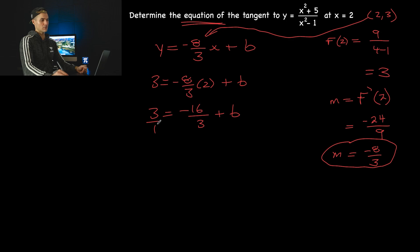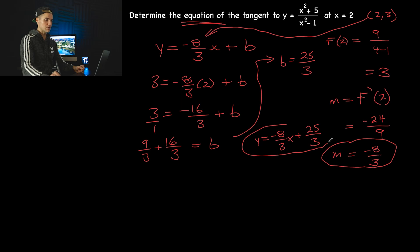Now if we've got a common denominator here, that'd be like 9 over 3. Bring the negative 16 over 3 over. That becomes positive is equal to b. So we get a b value of 25 over 3, which does not simplify any further. So our final answer would be negative 8 over 3x plus 25 over 3, like that. That would be the full equation of the tangent on this function at an x value of 2.